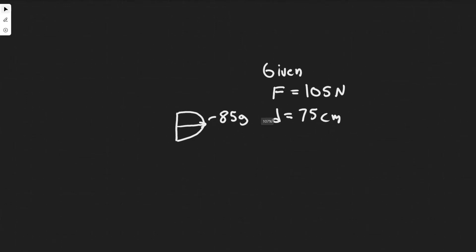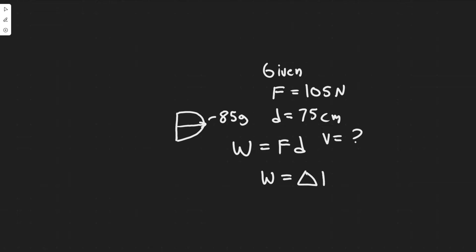So how are we going to solve for this? We're given force and distance, which clues me into the idea of work, where work equals force times distance. Since I'm given these, I can find the work. They want us to find the speed of the arrow, so I want to find velocity. Now, how can I relate velocity to work? Based on the work-energy theorem, work equals the change in kinetic energy.